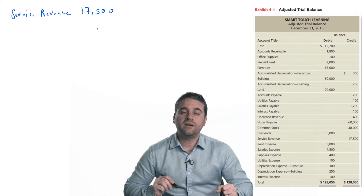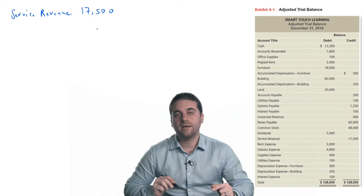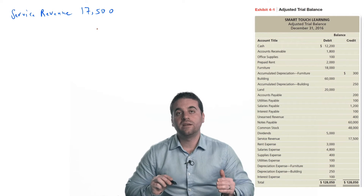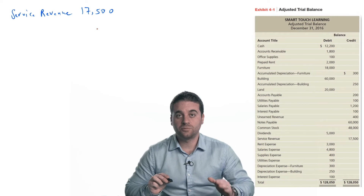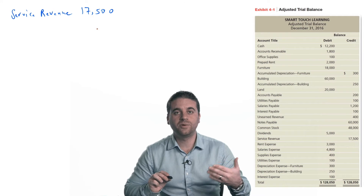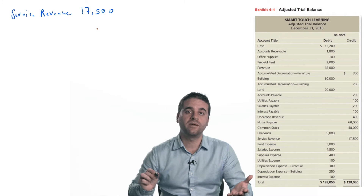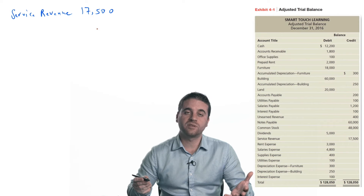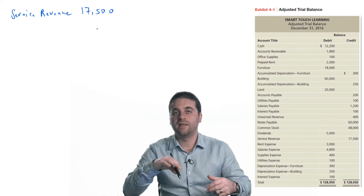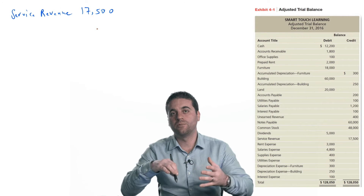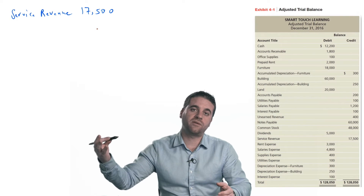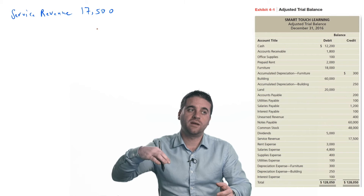The income summary account is created temporarily — we only need it for the closing process. Once we finish the closing process, we're going to close that account as well. It's essentially a five-minute account: we create it and close it immediately. We create the income summary account to transfer revenues and expenses into it, and once we finish doing that, we close the income summary account as well. We zero out revenues by transferring the revenue balance to the income summary.